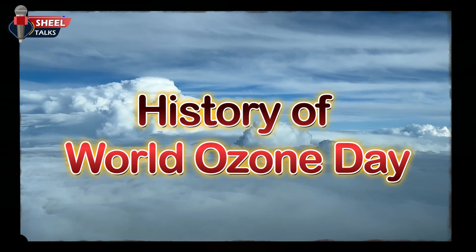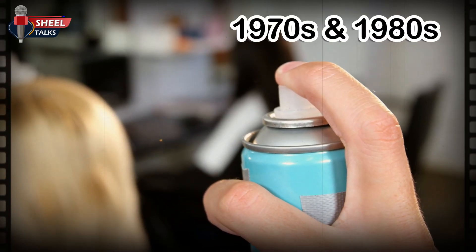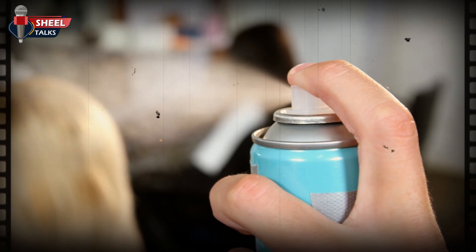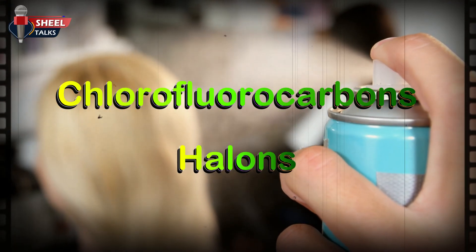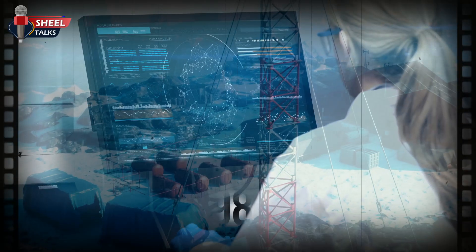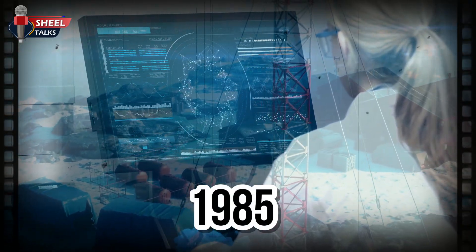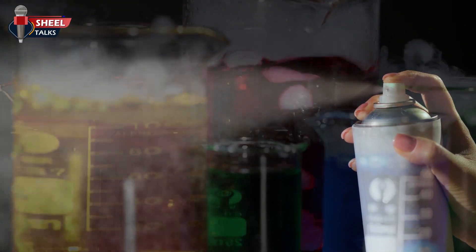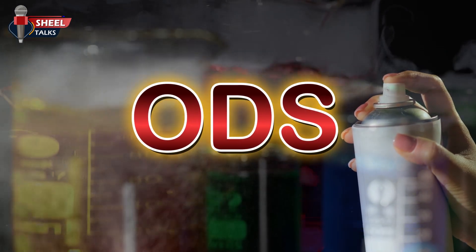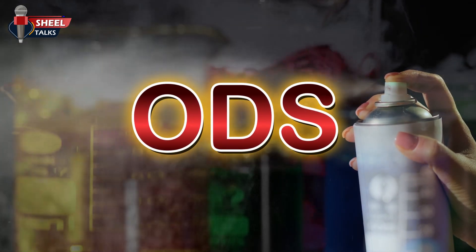Now let us talk about the history of this day. Between the 1970s and 1980s, scientists observed that some chemical gases we were using, such as chlorofluorocarbons and halons, were slowly destroying the ozone layer. But in 1985, when the discovery was made and a massive hole was found over Antarctica, it shocked the entire world. This was not just a discovery, but a warning for all of us — that if we did not take the right steps in time and stop the use of ozone-depleting substances, the future of coming generations could be at risk.